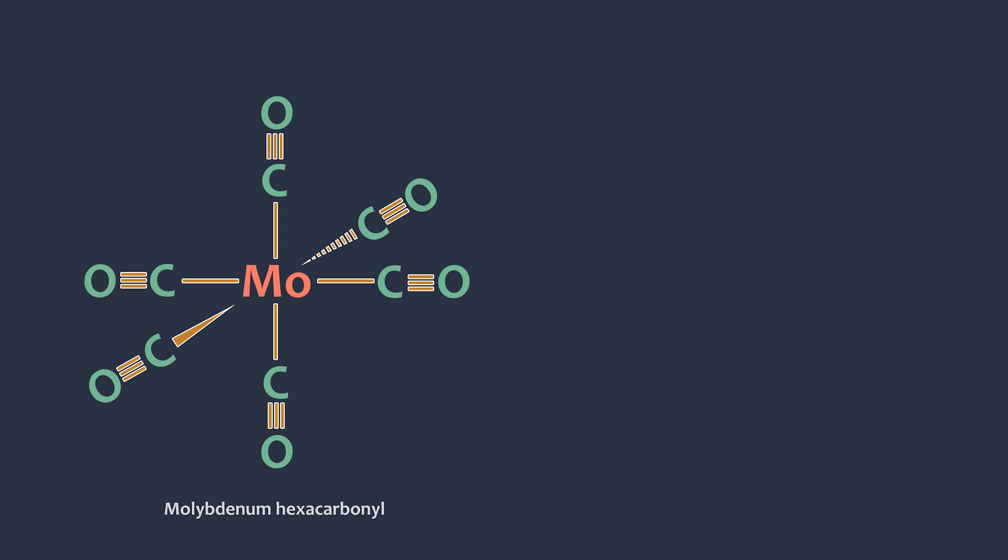Here, we have molybdenum hexacarbonyl. This complex has a molybdenum metal center surrounded by six carbonyl ligands. First, we need to add electrons to the oxygen atom so that they have eight electrons around them. Next, we are going to cleave the metal ligand bonds that give each ligand two electrons.